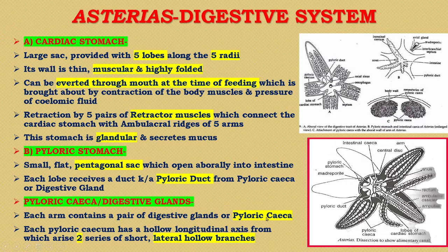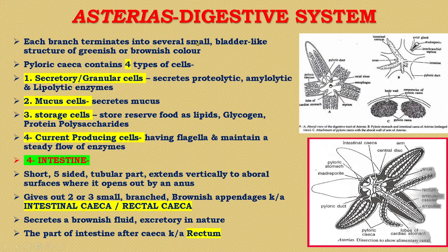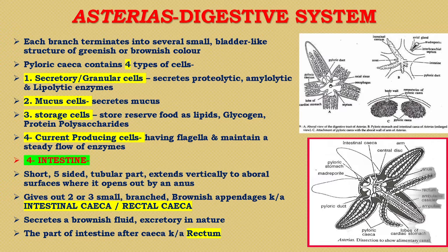Each pyloric caecum has a hollow longitudinal axis from which arise two series of short lateral hollow branches. Each branch terminates into several small bladder-like structures of greenish or brownish color. The pyloric caeca contain four types of cells: first, secretory or granular cells which secrete proteolytic and amylolytic enzymes; second, mucus cells which secrete mucus; third, storage cells which store reserve food as lipids, glycogen, protein, and polysaccharides; and fourth, current-producing cells having flagella which maintain a steady flow of enzyme.